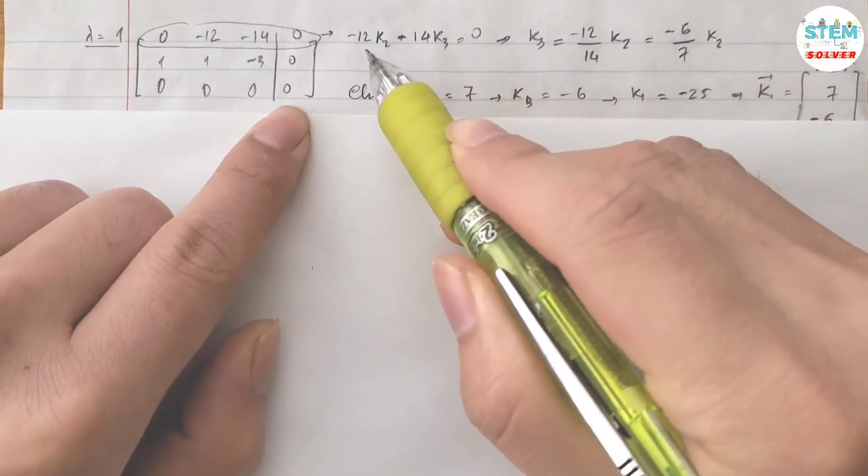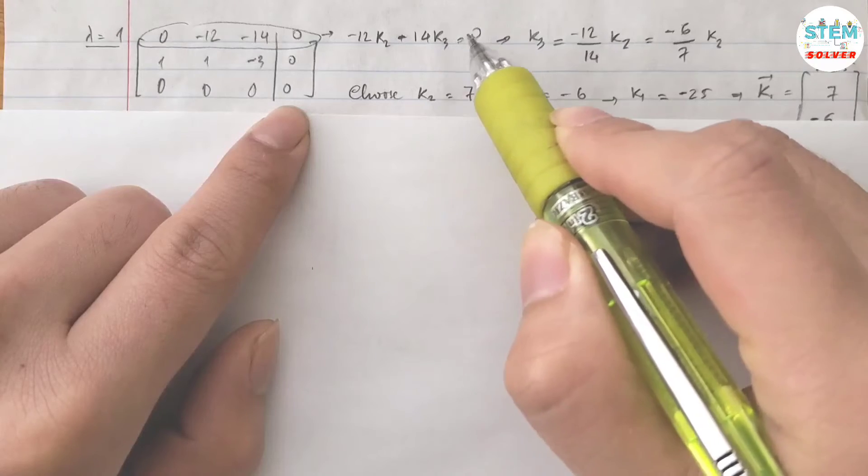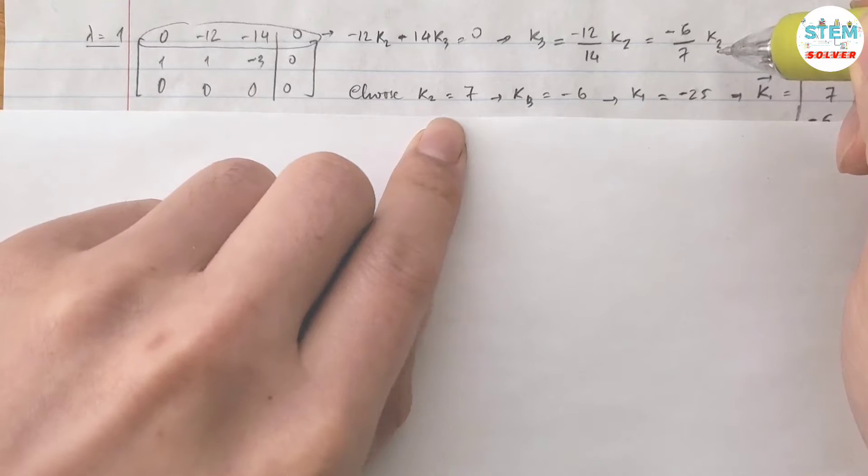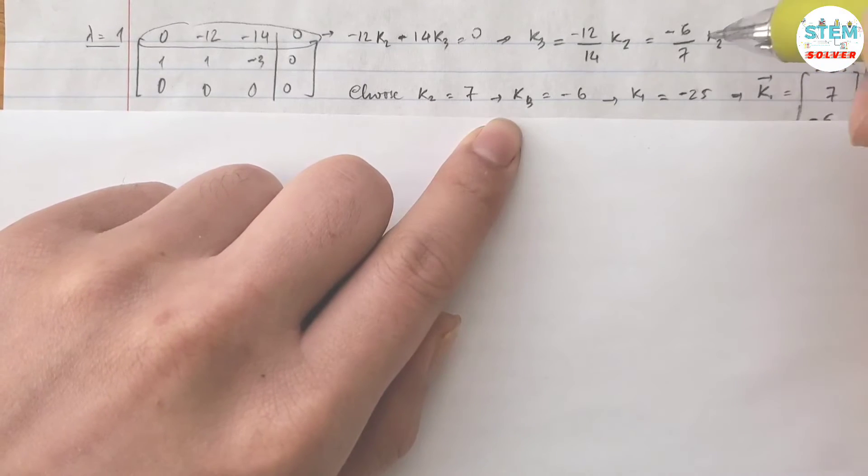Now from the first equation, I have negative twelve k2 minus fourteen k3 equals zero. So for k3, that gives me negative six over seven k2. Use k2 equals seven, then k3 is negative six.